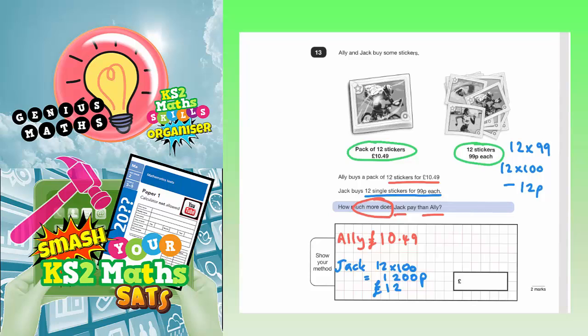So because we times that by 12, we've got to subtract 12 pence from that. So £12 take away 12 pence. Well, if you take away 10 pence, that would be £11.90. So take away the extra 2 pence would be £11.88.